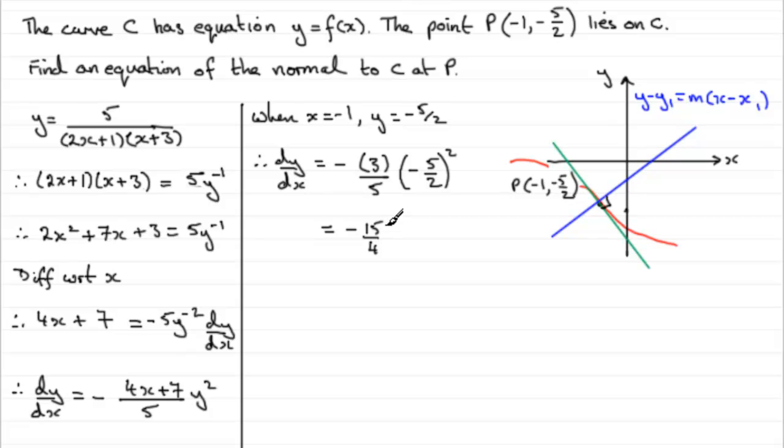Now, we can use the perpendicular gradient rule, which is that the product of the gradient of the tangent and then the normal comes to minus 1. So that means that the gradient of the normal must be 4 over 15. It's a simple rule. You just need to change the sign here and invert the fraction. So we've got the gradient now of the normal. So let's just put that in. Therefore, gradient of normal equals 4 over 15.